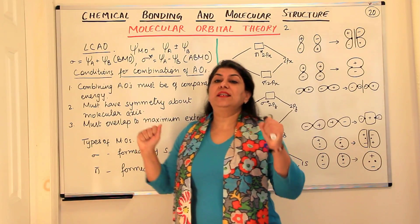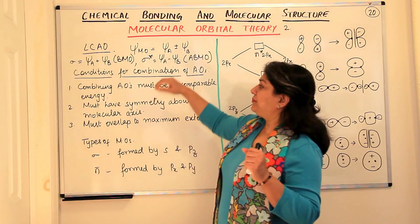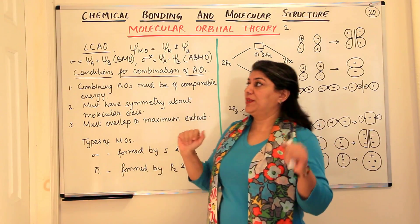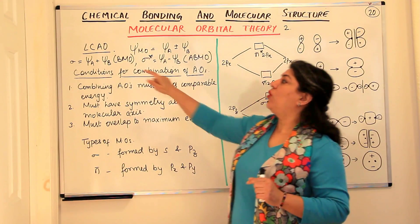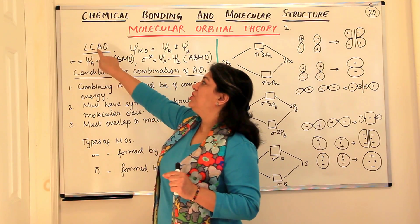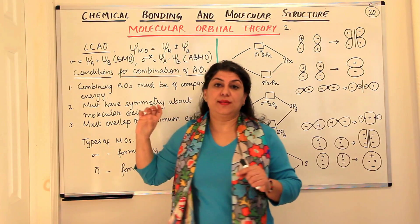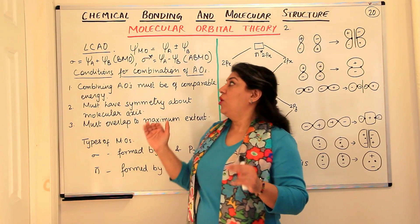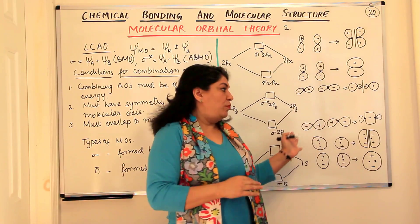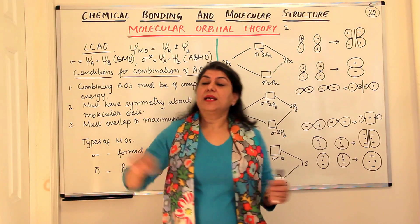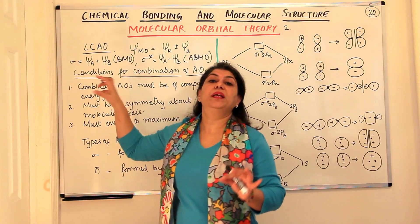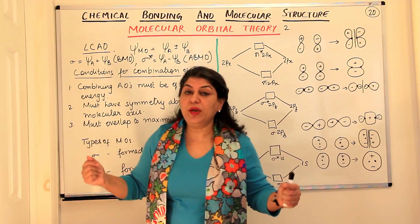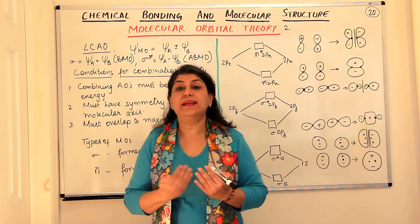So now what are the conditions? This interference or combination of atomic orbitals is called the linear combination of atomic orbitals—LCAO. The name given to this method of dealing with molecular orbitals is the linear combination of atomic orbitals, meaning atomic orbitals combine linearly.